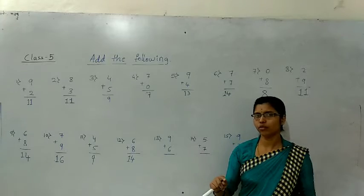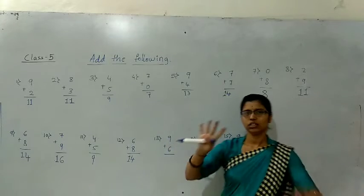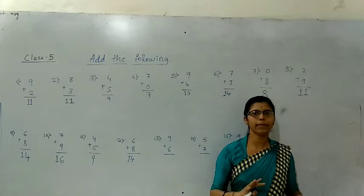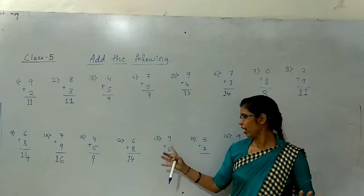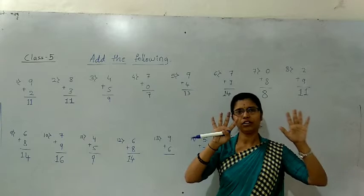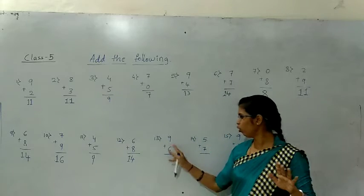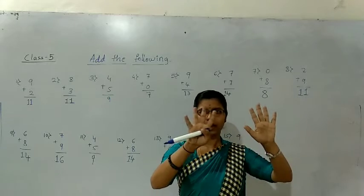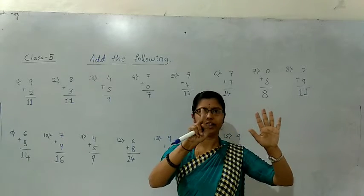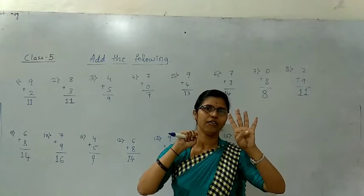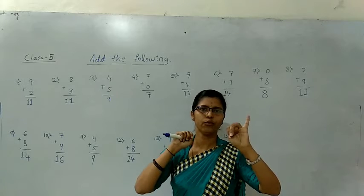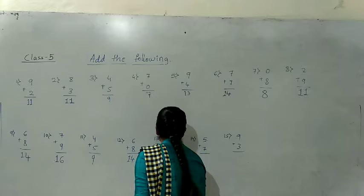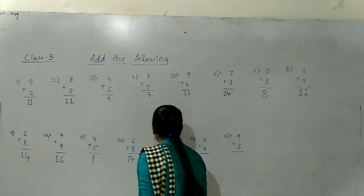Next one — hold 9 fingers because the above number is 9. The below number is 6. Count after 6: seven, eight, nine, ten, eleven, twelve, thirteen, fourteen, fifteen. The answer is 15.